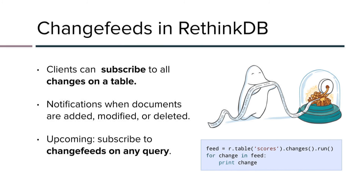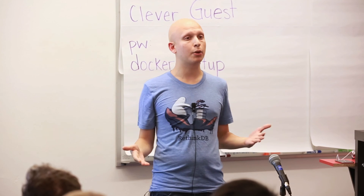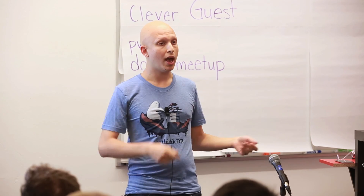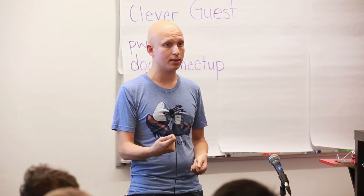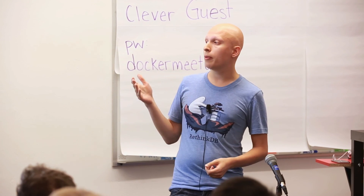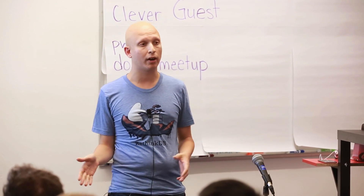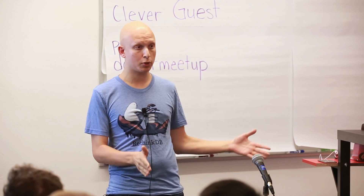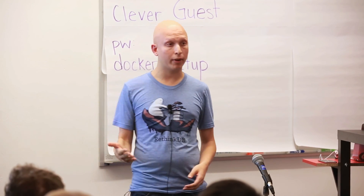In your apps, you can rerender views and do all sorts of things. Instead of long-polling your database or trying to figure out what's changed, you just subscribe to the table and say, 'Tell me when things have changed.' Your app will react and listen to those changes. In the example of Slack, instead of getting notified every five milliseconds, it would get notified maybe once an hour or once every 24 hours. And we have an upcoming version where you can subscribe to any query, not just tables.